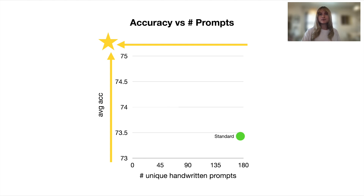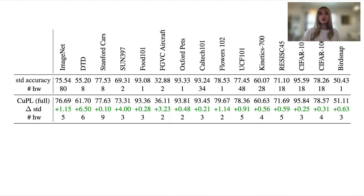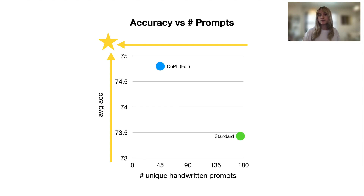Here are the prompts we came up with to query the LLM to generate descriptions: five for ImageNet, four for Kinetics-700, and two for aircrafts — and we did this for all 15 datasets. We see higher accuracy on every single dataset, with more than one percentage point gain on ImageNet and significantly fewer handwritten prompts overall, including a drop from 80 to just five handwritten prompts for ImageNet. Here we can see this visually compared to the baseline, with higher average accuracy and fewer total prompts.